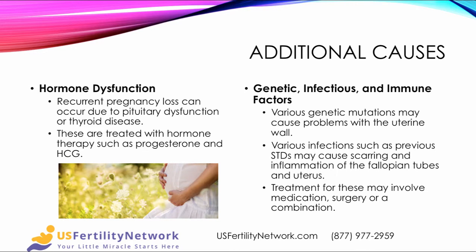Also genetic, infectious, and immune factors. There are various genetic mutations that may cause problems with the uterine wall. Various infections such as a previous sexually transmitted disease can lead to scarring and inflammation of the fallopian tubes and/or the uterus. Treatment for these may involve medication, potentially surgery, or a combination of the two.